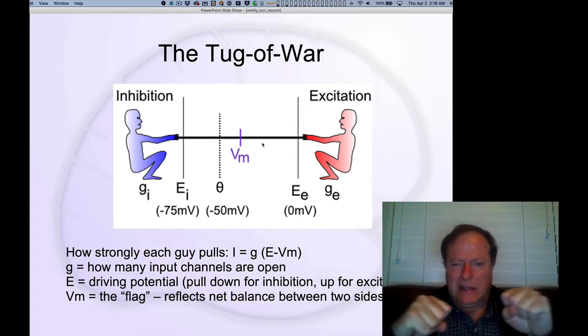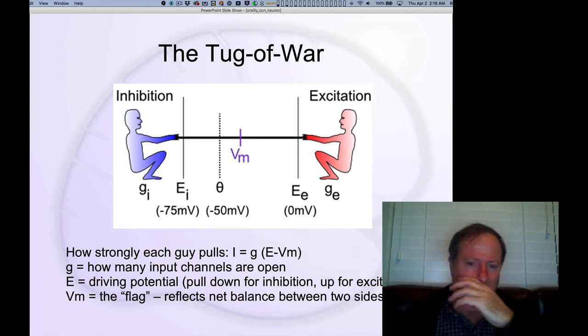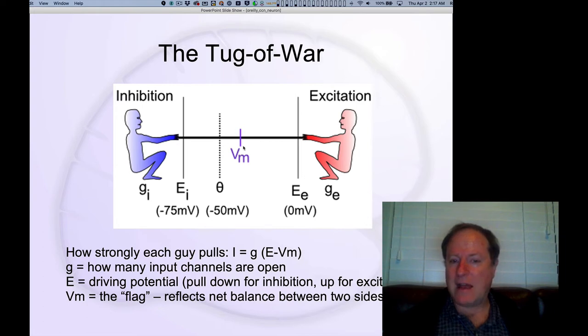And so they're just pulling at this thing and trying to pull that flag one way or the other. And that's really what's happening in a neuron. The inhibitory side is trying to pull the flag, which in this case is the membrane potential, that electrical differential, the difference in positive versus negative charges inside versus outside of the neuron, which we represent by the letter V, which stands for voltage, and M, which stands for membrane, so membrane voltage or membrane potential.